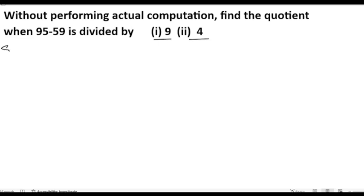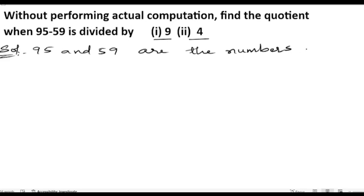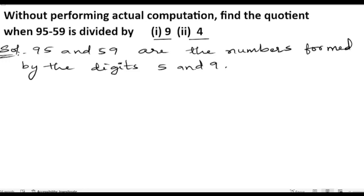Without performing actual computation, find the quotient when 95 minus 59 is divided by 9, and when divided by 4. So let us start the solution. They have given 95 and 59, which are two numbers that are reversed to each other — that is, the digits are reversed. The numbers are formed by the digits 5 and 9.